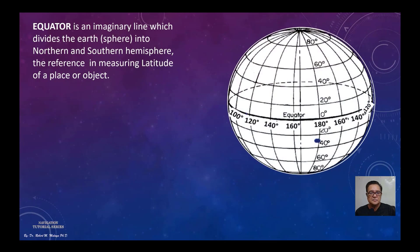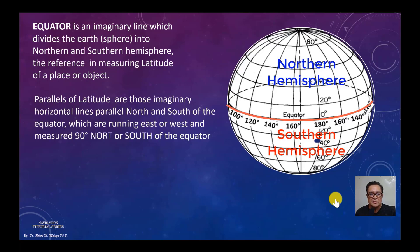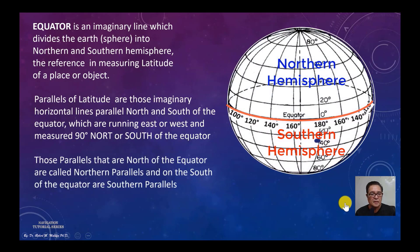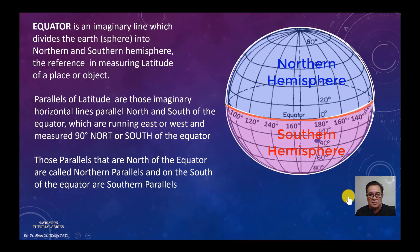The equator is an imaginary line which divides the Earth into the Northern and Southern hemisphere, and is the reference in measuring the latitude of a place or object. Parallels of latitude are imaginary horizontal lines parallel to the equator, running east or west, measured from 0 degrees at the equator up to 90 degrees north or 90 degrees south. Parallels north of the equator are called northern parallels; parallels south are called southern parallels.